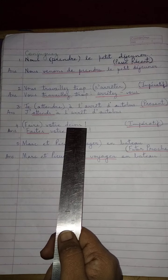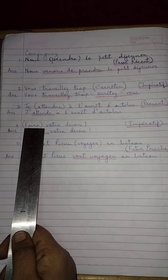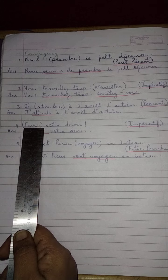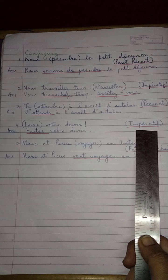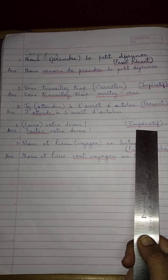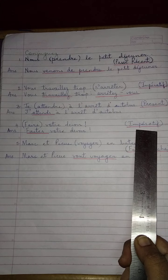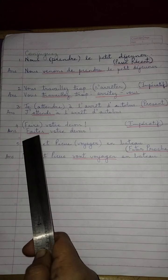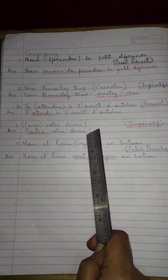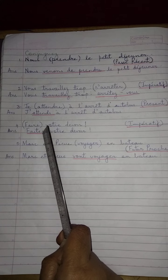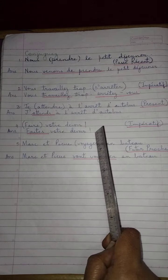Faites votre devoir. The word to be conjugated is 'faire', expected to be conjugated in the imperative form. Now, 'faire' is an irregular verb — you must know it by heart. 'Faire' will change to 'faites': F-A-I-T-E-S. Faites votre devoir. Please remember: it is F-A-I-T-E-S, not F-A-I-T-E-Z. It is irregular.